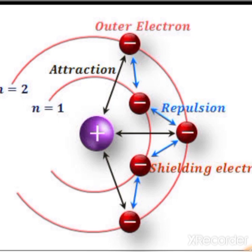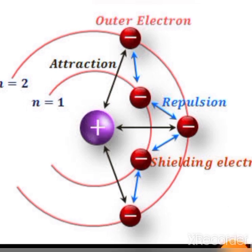Therefore, the ionization energy increases in the group for these elements. This is because of the deviation caused by the poor screening effect, and a similar ionization energy variation is also seen in group 14.